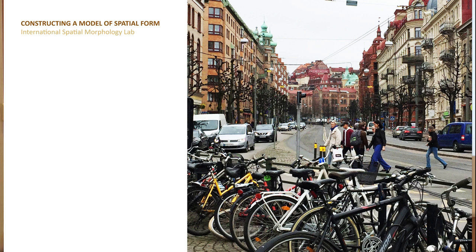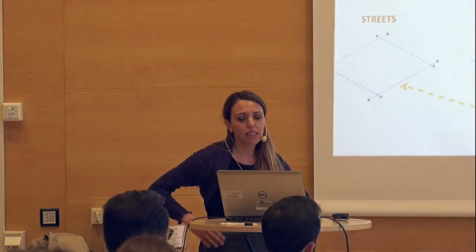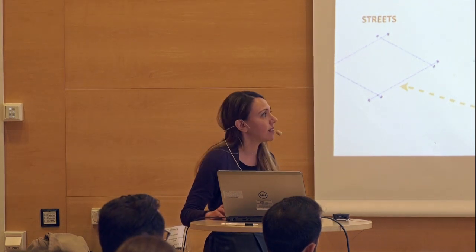We study the physical environment of the city — the basic components, the basic objects of spatial design: the streets, the plots, the buildings, and how they relate to the life of the city. How do we move? How do we experience the city? How do we organize the public life, our private properties, and all that? So this is what we study.